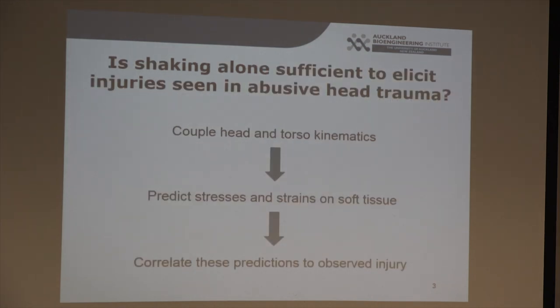It's thought that computational models might be able to provide a mechanistic relationship between a deliberate shaking action and the injuries that are seen. Here at the ABI, the main question our group is trying to answer is: is shaking alone sufficient to elicit the injuries that are seen in shaken baby syndrome?